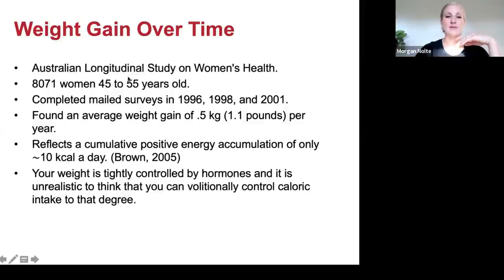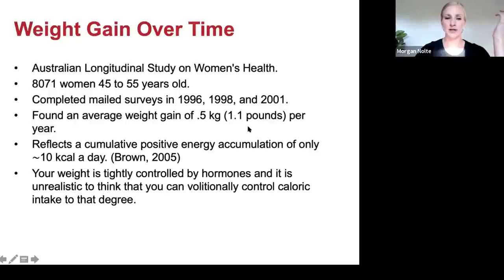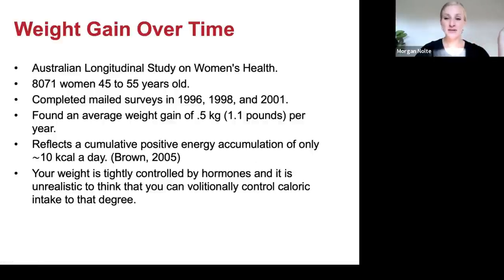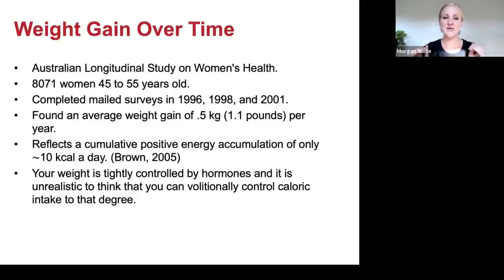Looking at weight gain over time: the Australian Longitudinal Study on Women's Health studied over 8,000 women aged 45 to 55, completing mail-in surveys in 1996, 1998, and 2001. Researchers found an average weight gain of about one pound per year — a positive energy accumulation of only about 10 calories a day. No one can control how many calories they eat or burn within that tight a range; it is unrealistic. Your weight is tightly controlled by your hormones.